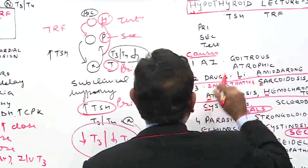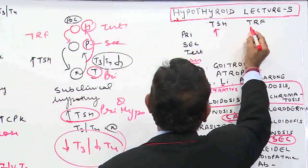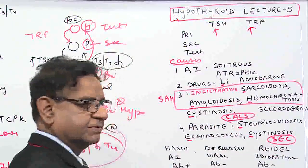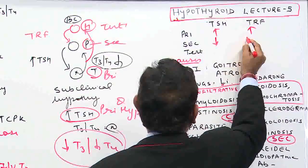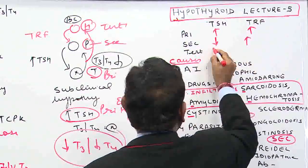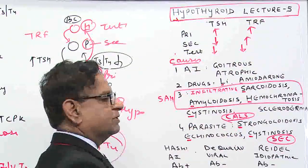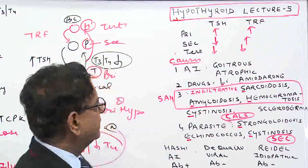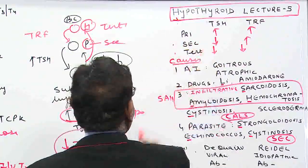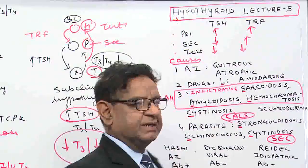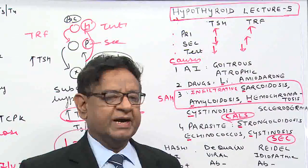In primary hypothyroid, TSH is increased and TRH is increased. In secondary hypothyroid, TSH is reduced but TRH is high. In tertiary, both TSH and TRH are reduced. So if disease occurs in the hypothalamus both are reduced; if disease is in the pituitary, TSH is reduced; but both TSH and TRH are increased in primary disease when the problem lies in the thyroid gland.